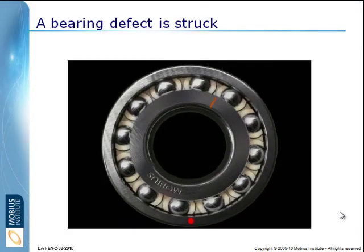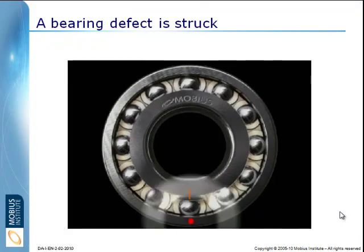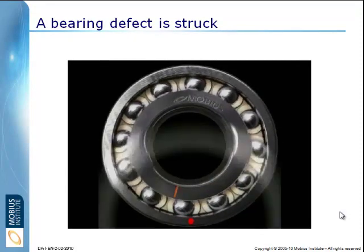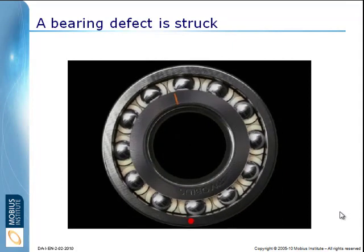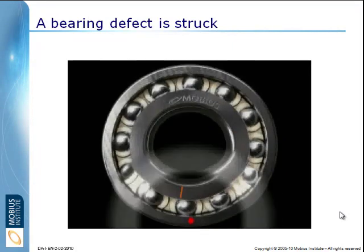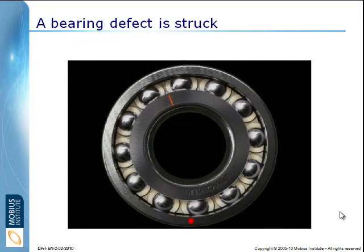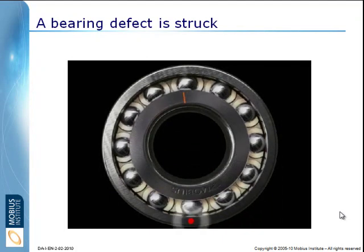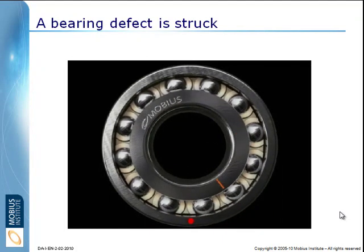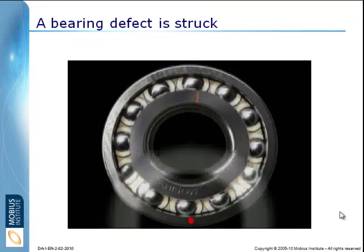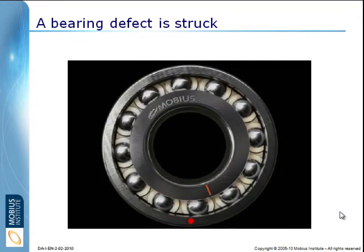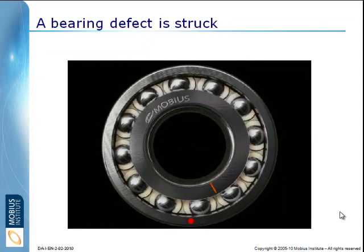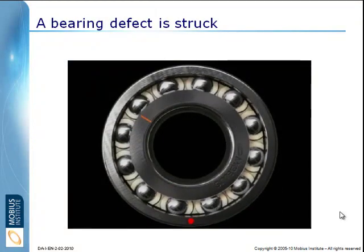Here we have a rolling element bearing with a defect on the outer race at the bottom. As this rotates around and the balls hit that defect, they make a little pinging sound. And this is called a bearing tone. This is the source of vibration in the ball bearing for this type of defect, and we're going to discuss three different ways we can look at this defect.